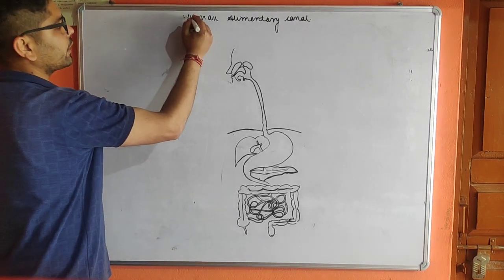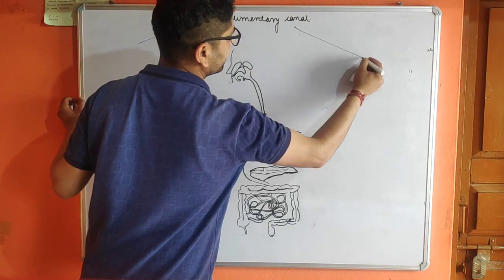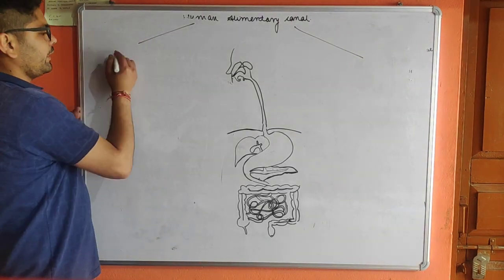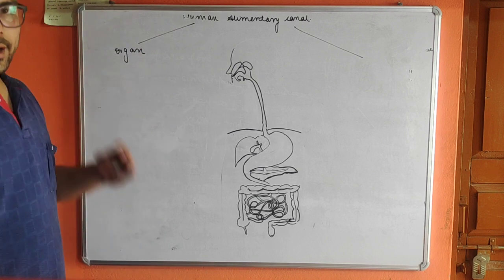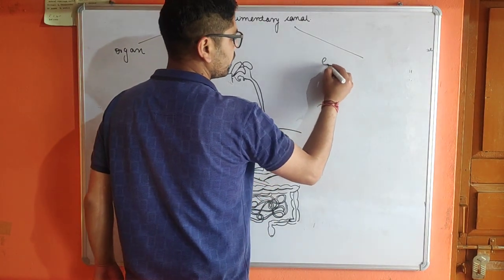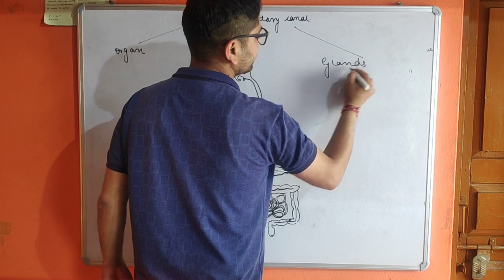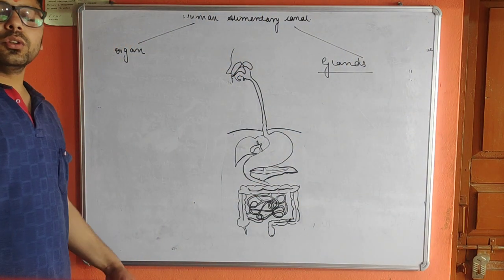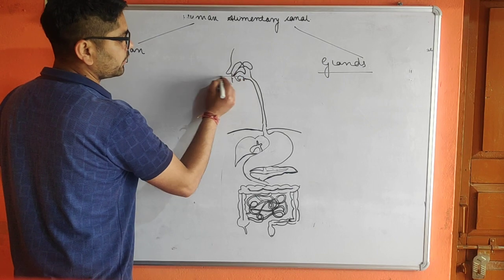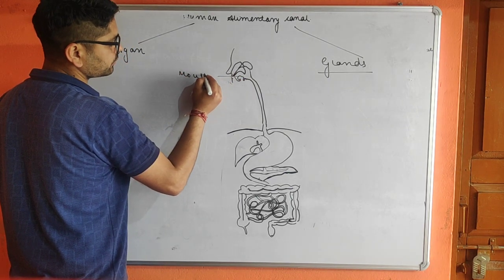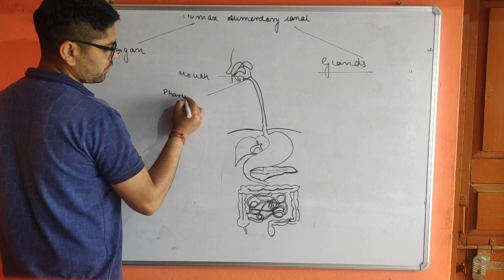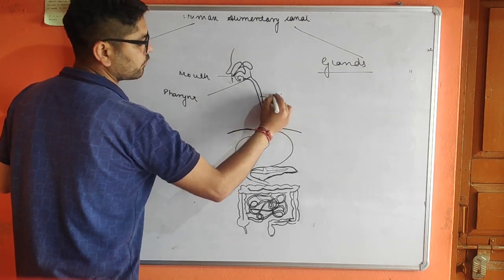Now coming to the human alimentary canal. It can be divided based on the organs involved and the functions they perform. The alimentary canal is an organ system. We will also study the glands involved in digestion — glands are structures that release chemicals when required. Food is taken in from the mouth, and the next portion is called the pharynx, followed by the food pipe.